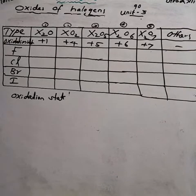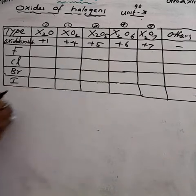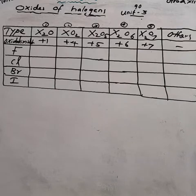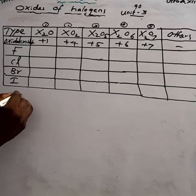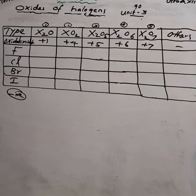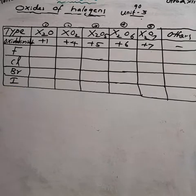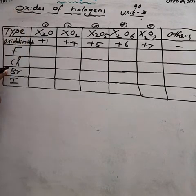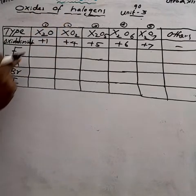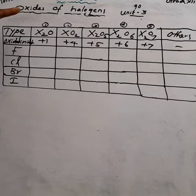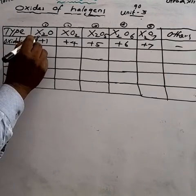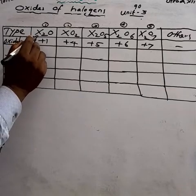First we are going to learn about fluorine. Fluorine is the most electronegative element among halogens and also has a small size. Except fluorine, other halogens — chlorine, bromine, and iodine — can form oxides of halogen (X₂O, XO₂, X₂O₅, X₂O₆, X₂O₇). Fluorine cannot form these compounds.